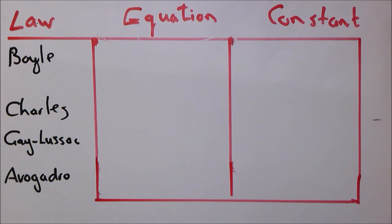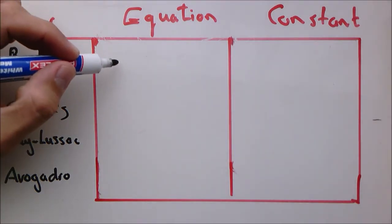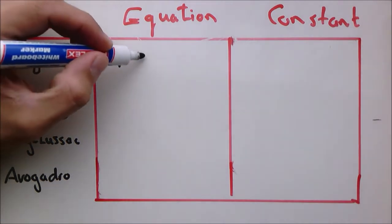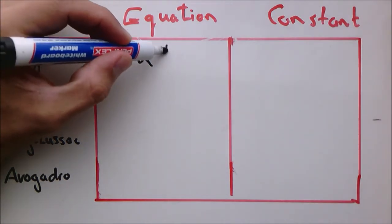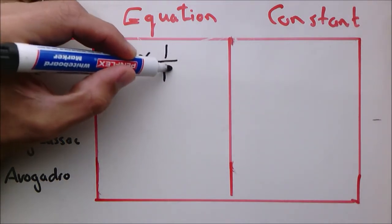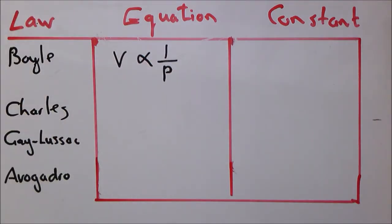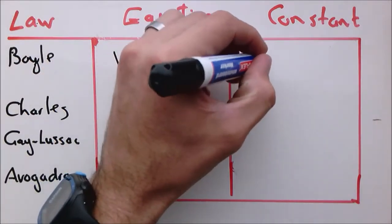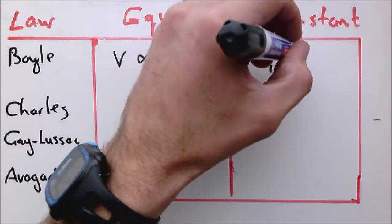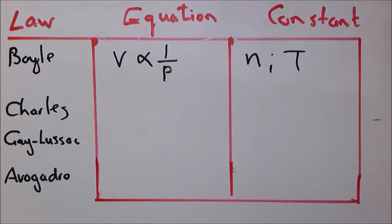First of all, with Boyle's law, we looked at the relationship between volume and pressure and we saw that volume is indirectly proportional to pressure. That's when the amount of moles were kept constant and it was also at a constant temperature.